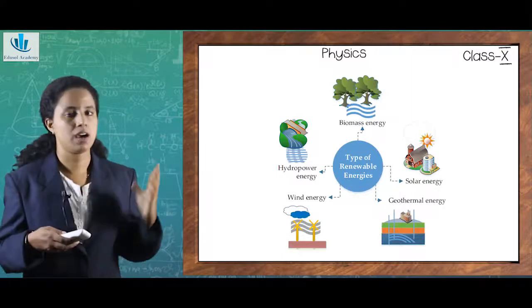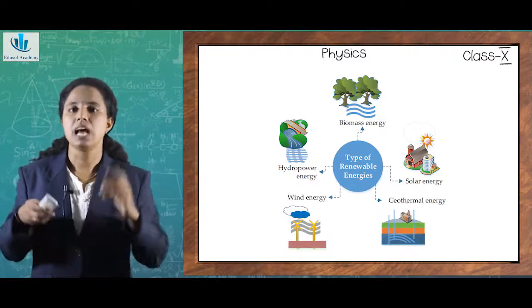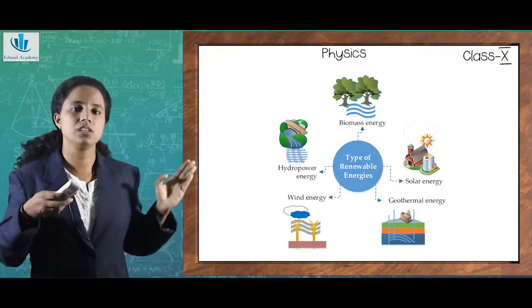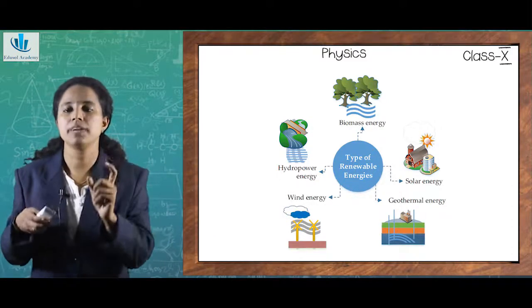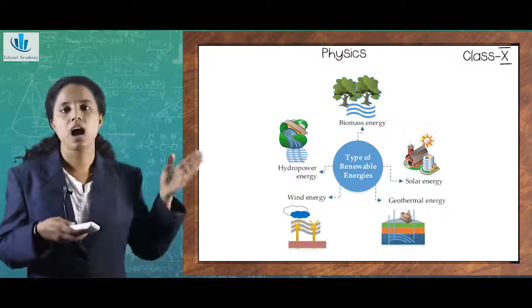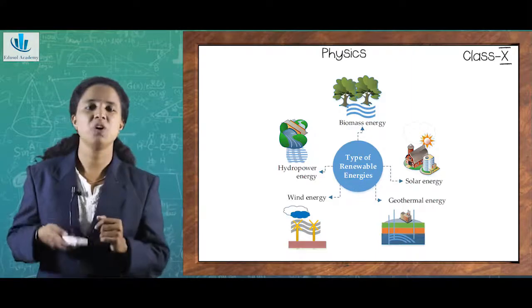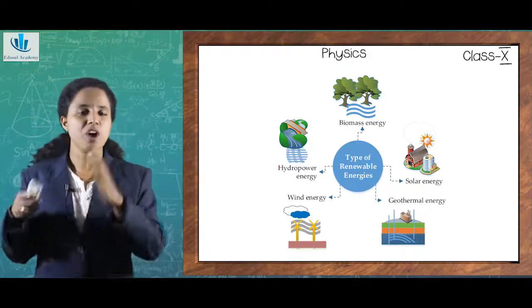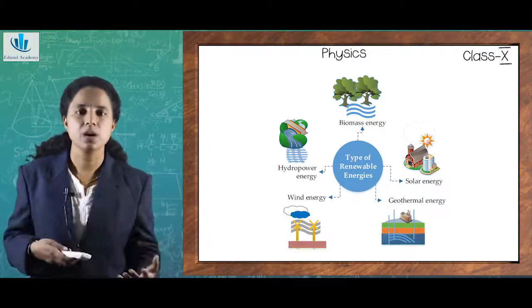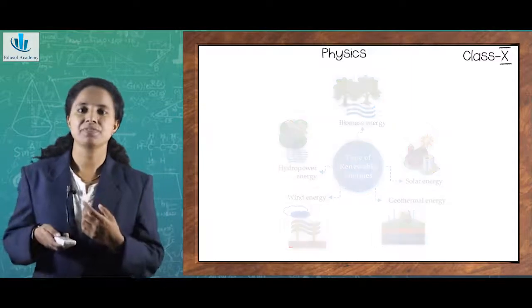The types of renewable energies include biomass — energy obtained from living plants or animals; solar energy; geothermal energy — energy obtained from the heat of the earth; wind energy; and hydropower energy — energy obtained from the flowing water or kinetic energy of water. Energy is converted from one form to another and used in different applications like producing electricity, lighting houses, running machines, and commercial and industrial purposes.